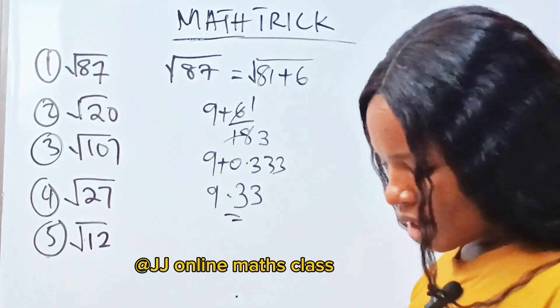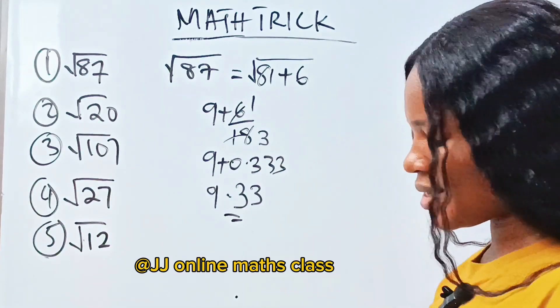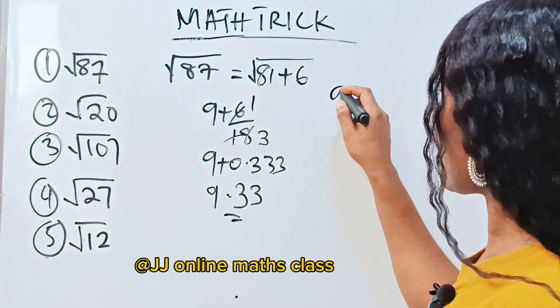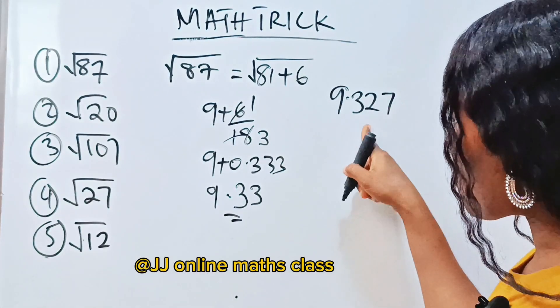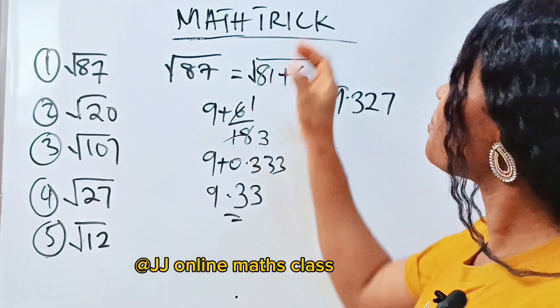Now let's check. Square root of 87 will give us 9.3273. So 9.327, which approximately is 9.33.